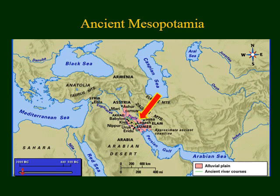Here's another map of ancient Mesopotamia. The arrow is pointing to what's called the alluvial plain, or the area where those rivers flooded. They left behind a thick silt that made it easier to grow crops after the waters receded following the flood.